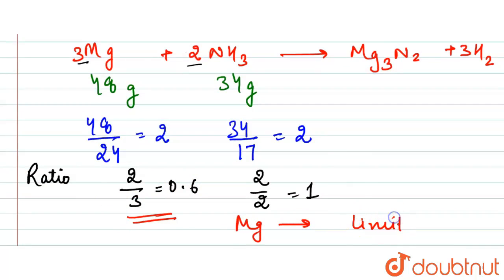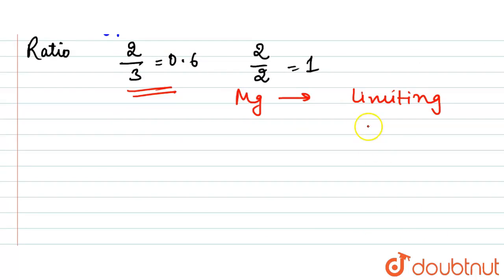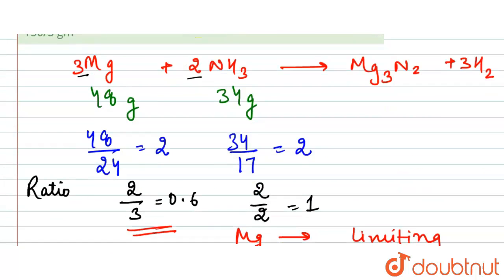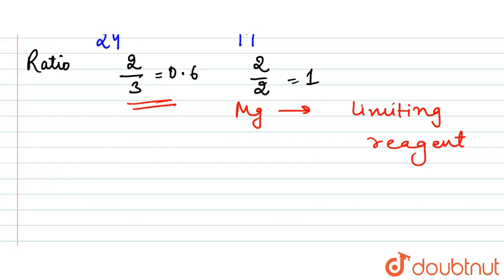Limiting reagent is that which is completely used in the reaction and it tells us about the amount of the product that is formed and the reactant that is used.